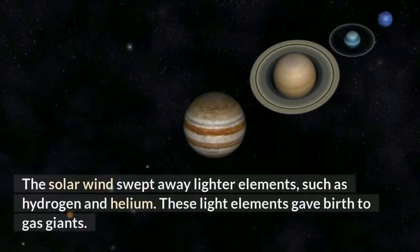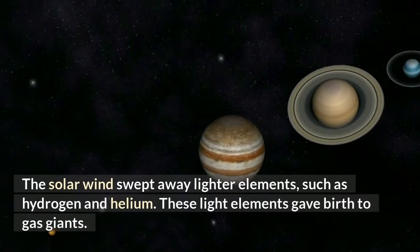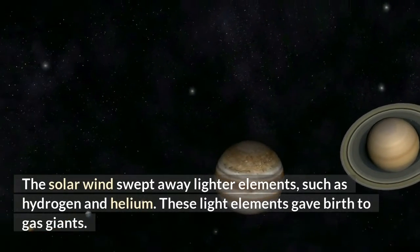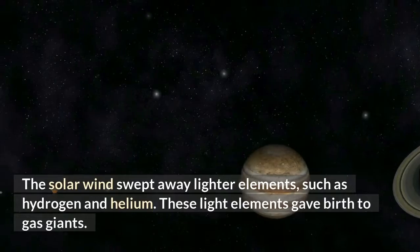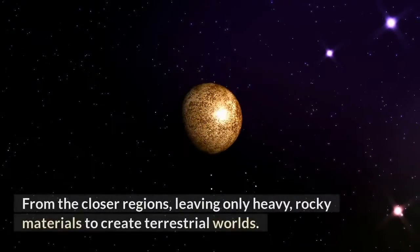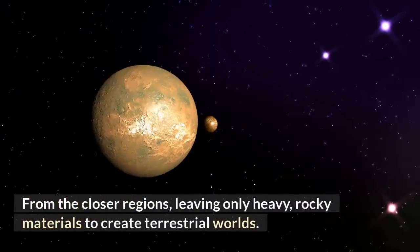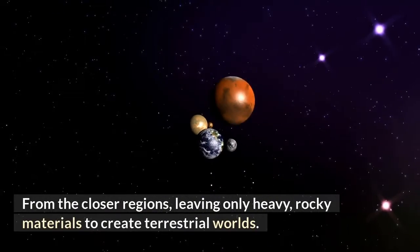The solar wind swept away lighter elements, such as hydrogen and helium. These light elements gave birth to gas giants. From the closer regions, leaving only heavy, rocky materials to create terrestrial worlds.